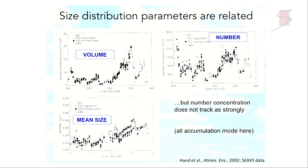If we look at the number concentration measurements made during that same period, we can see they are not so strongly tied. We can get number concentrations of about 1,000 whether we have a lot of particles or relatively small volume concentrations. This just shows us how difficult it is to model the number concentration because the constraints on it are so much less. We really have to model all the physics of what's happening to that size distribution to do a good job on understanding the number concentration — and this is just the accumulation mode here.